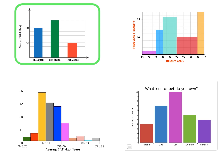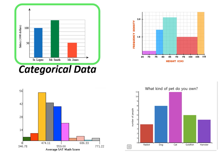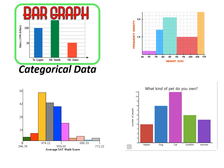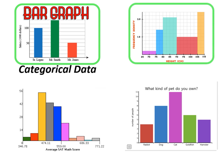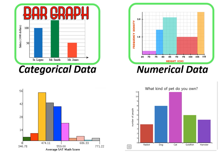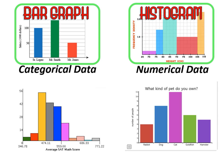Our first graph is categorical data and it is a bar graph. Our second graph lists numerical data — you can see at the bottom they're all numbers — and it is a histogram.